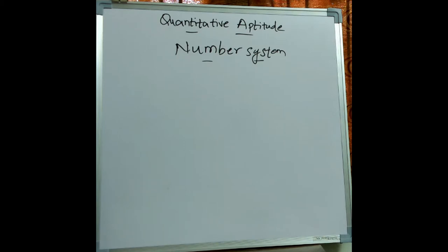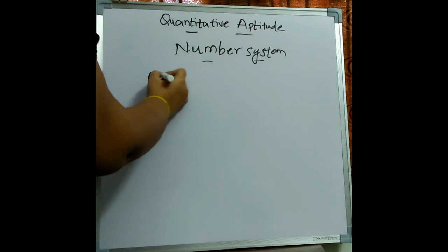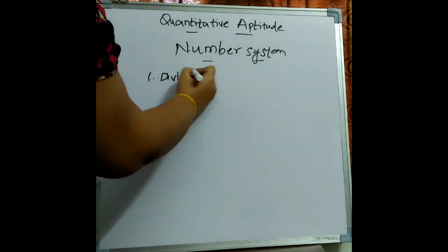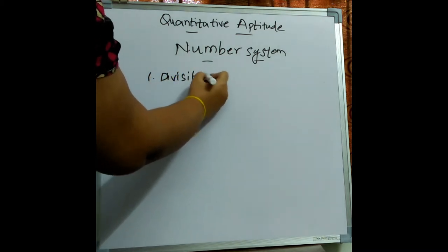Before starting directly with the problem of number system, first let's understand what are the important formulae which are required in order to solve number system problems. The first important rule is let's see what are the numbers divisible by 2.